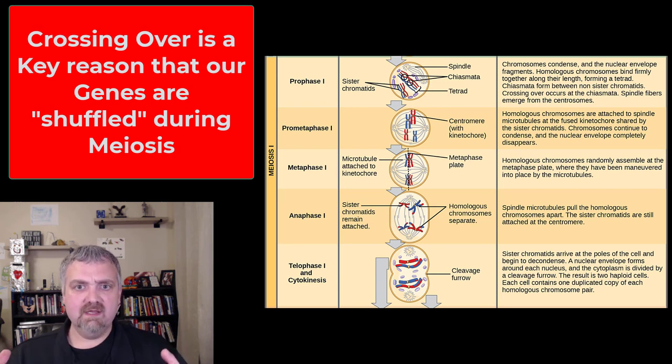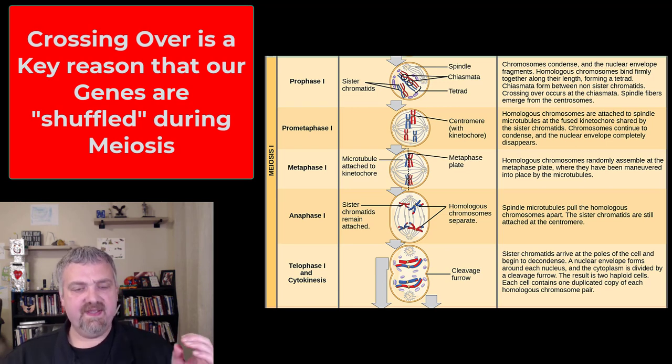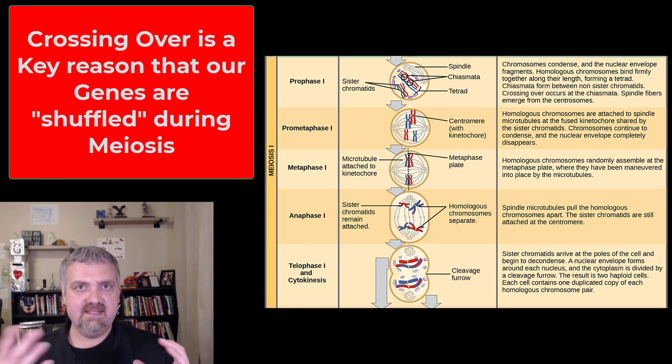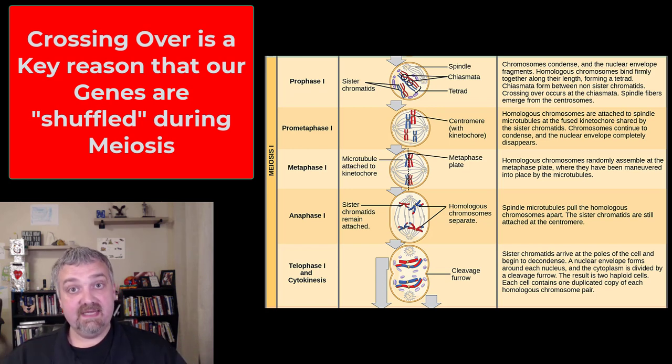With meiosis one, it looks a lot like mitosis. You have prophase, prometaphase, metaphase, anaphase, and then telophase and cytokinesis.